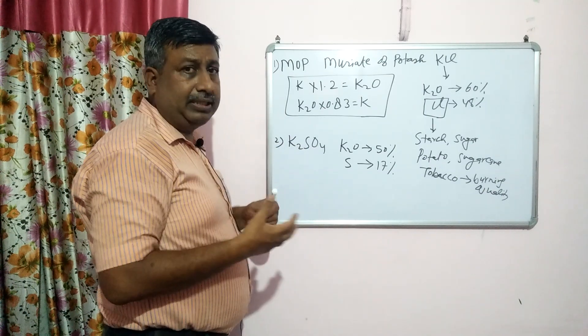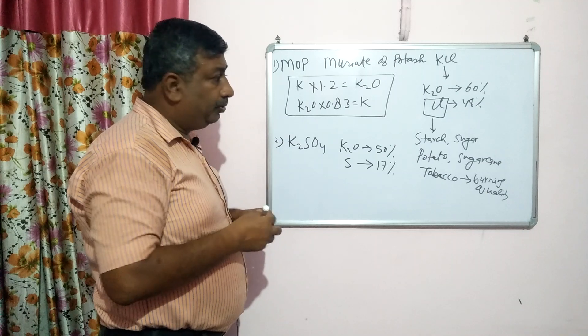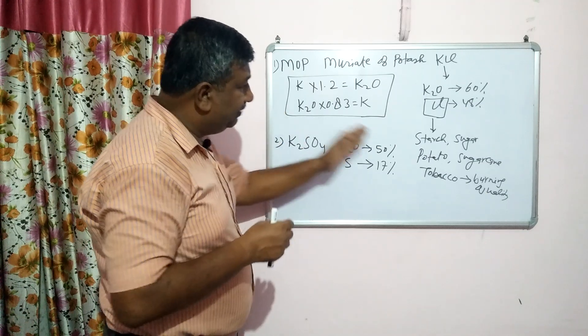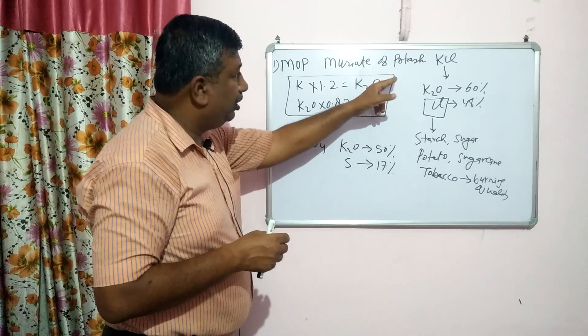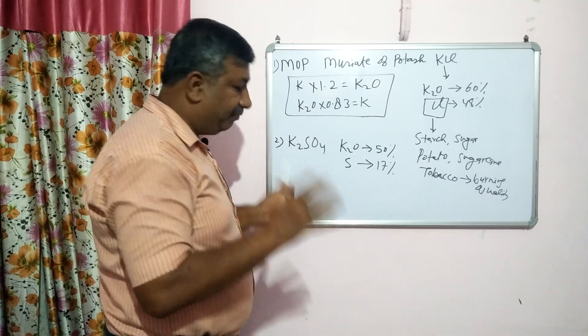Now how we can calculate the amount. Remember that if these crops — starchy crops, sugar crops, or tobacco — are being grown, then do not use muriate of potash; instead use potassium sulphate.